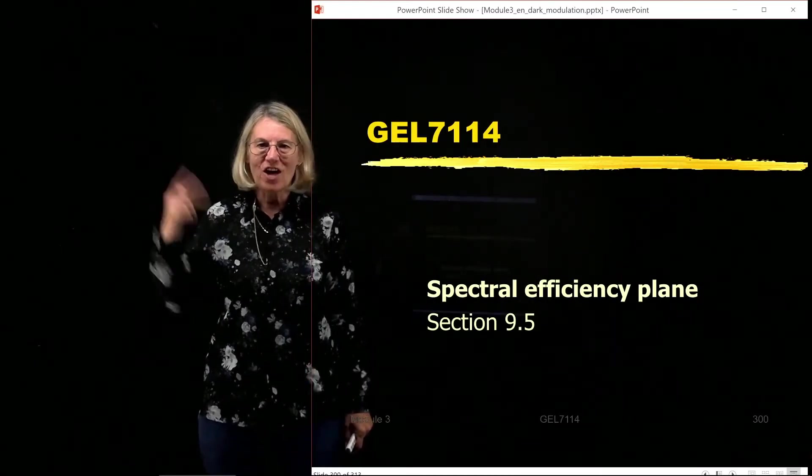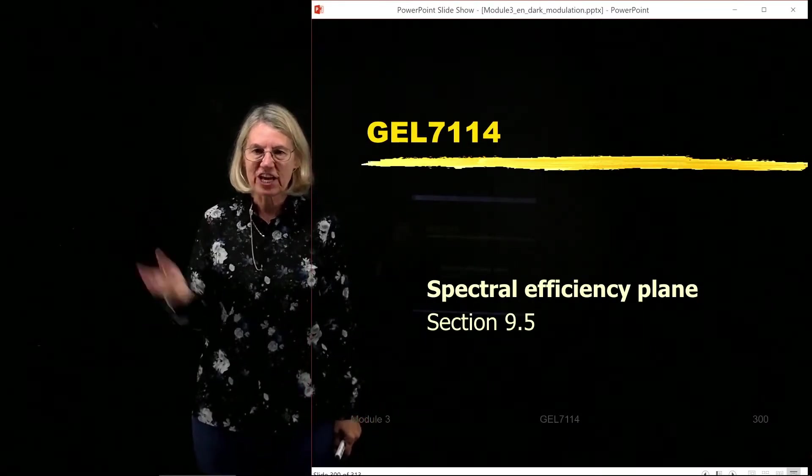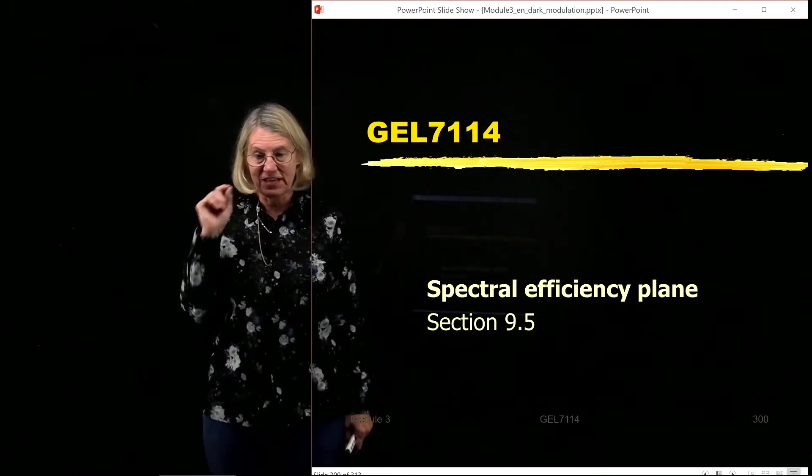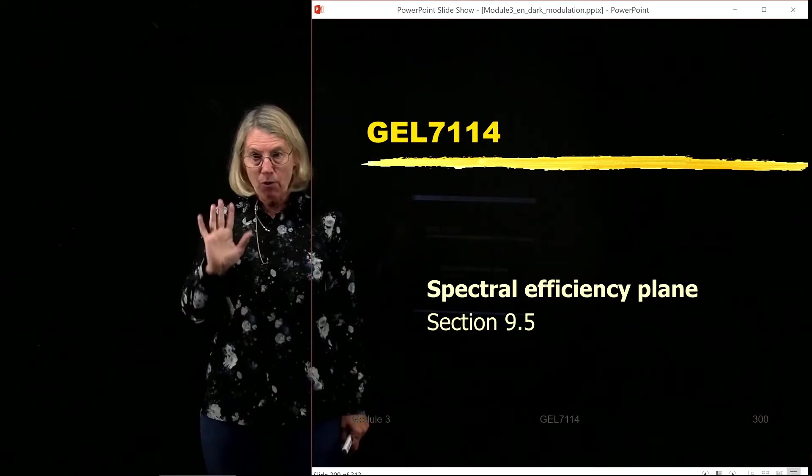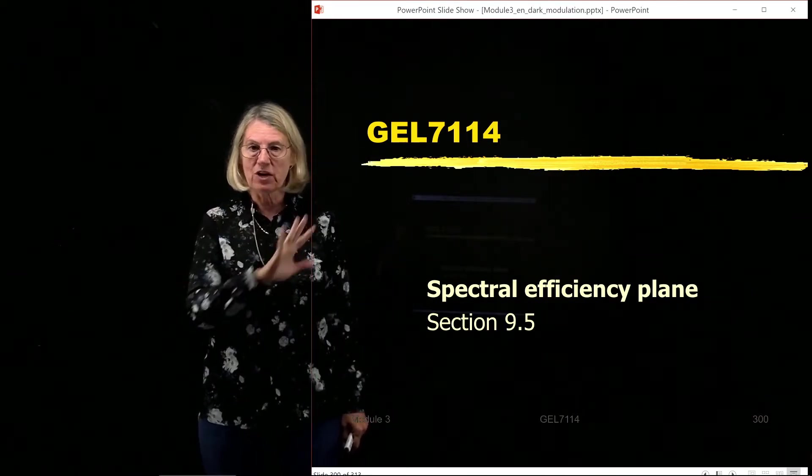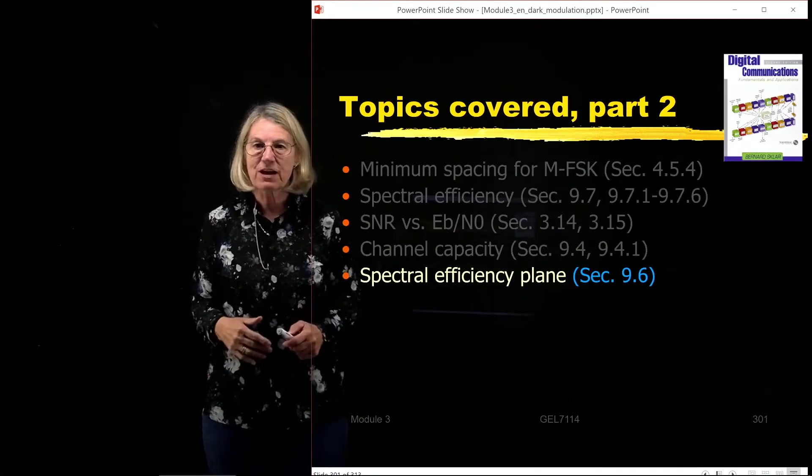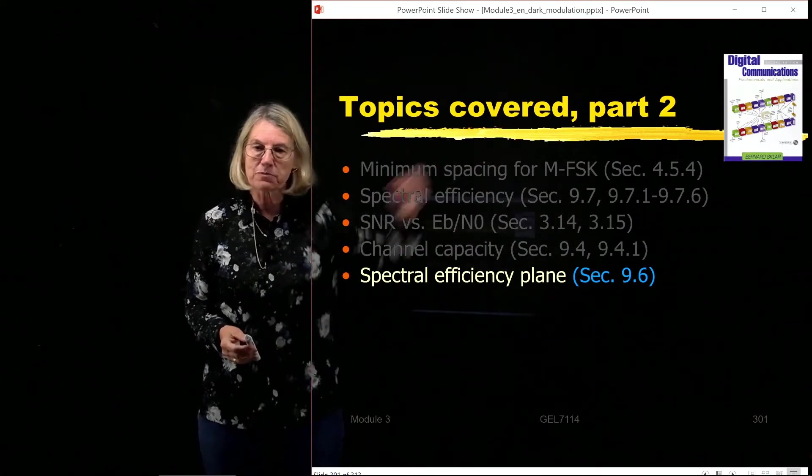Having seen Shannon's law now and found an equation for the channel capacity and a version of the channel capacity which is a function of Eb over N0, we're now ready to take a deep dive into what we call the spectral efficiency plane. Once again, this is covered in chapter 9 of our textbook from Sklar.